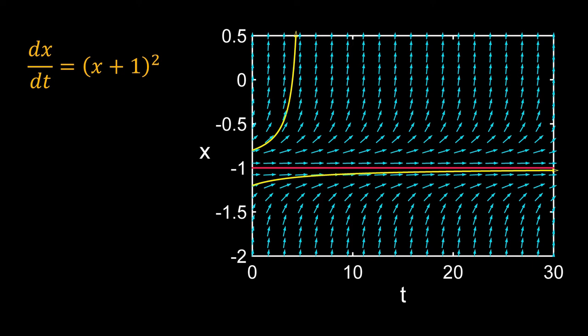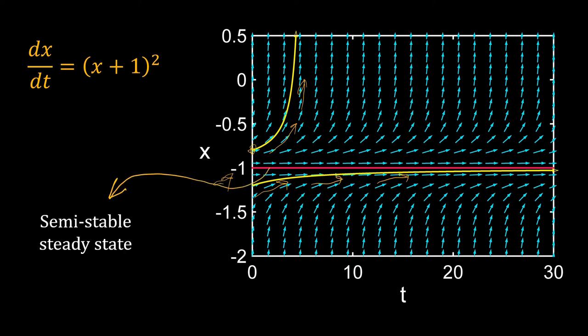x equal to minus 1 is a steady state. If we start above it, x will diverge away from this steady state. However, if we start below minus 1, with time x will converge to this steady state. So from one side the system reaches the steady state, from the other it moves away. This type of steady state is called a semi-stable steady state.